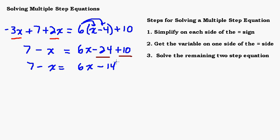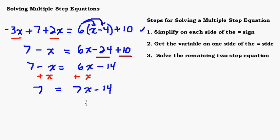That's step one. Step two: get the variable on one side. I have a negative x on the left and 6x on the right, so I'll add x to each side. 6x plus 1x is 7x. Now solving this two-step equation: I add 14 to both sides to get 21 equals 7x, then divide both sides by 7, giving x equals 3. That one came out nice!